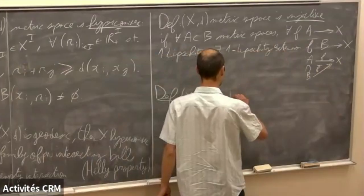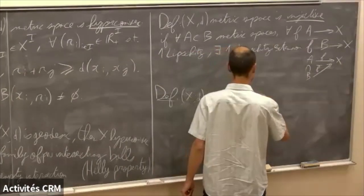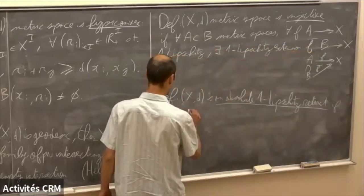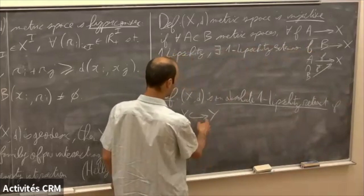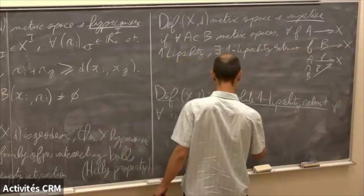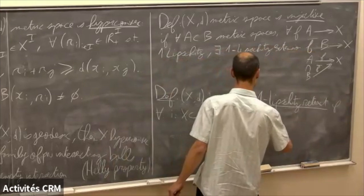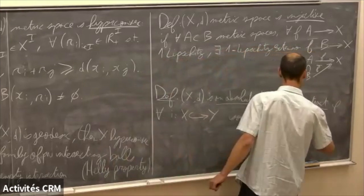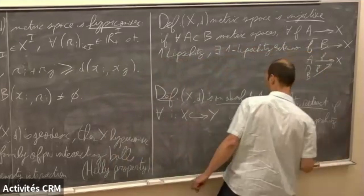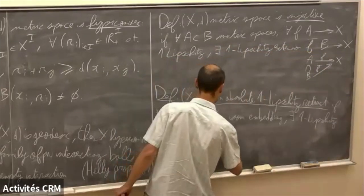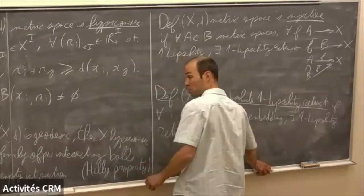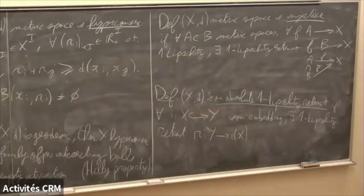A metric space X is an absolute one-Lipschitz retract if for every isometric embedding of X into a metric space Y, there exists a one-Lipschitz retract onto its image — a map from Y to the image of the embedding. So we have three a priori completely different definitions.